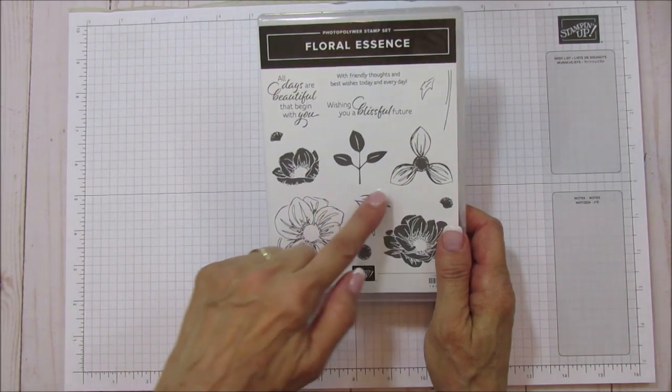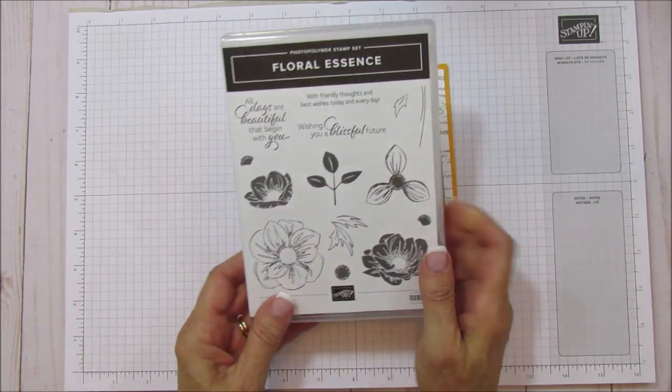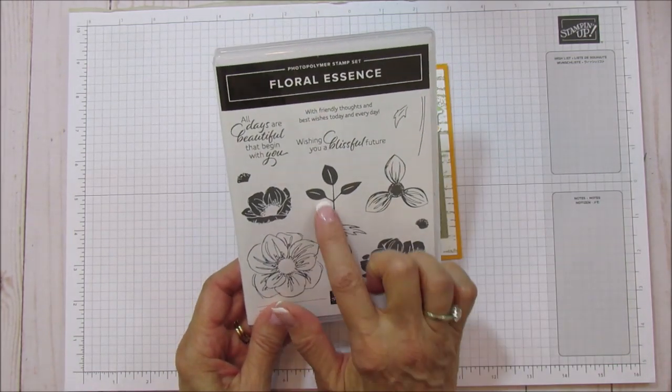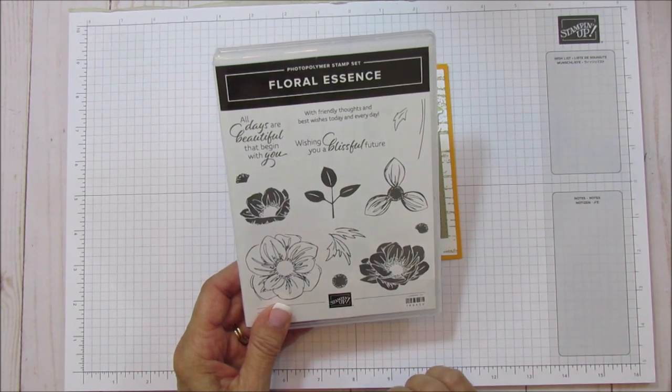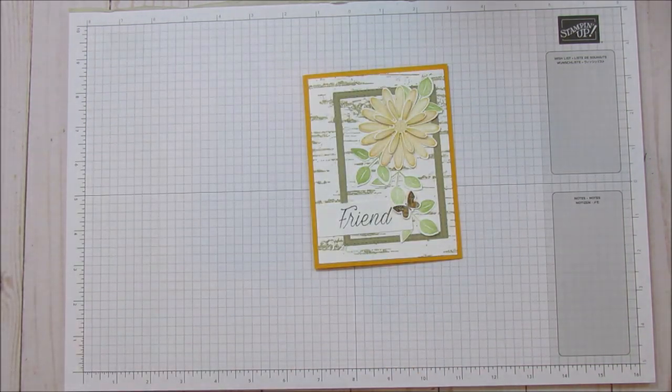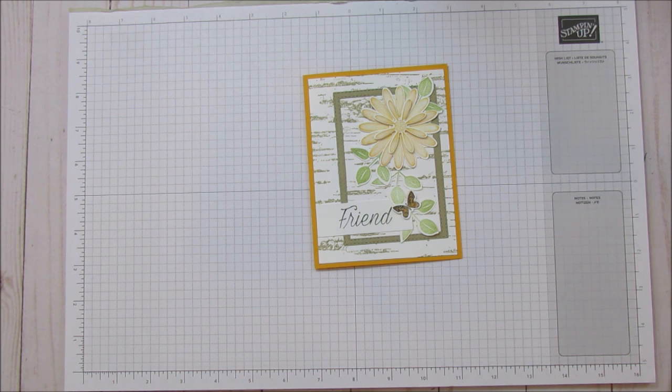I'm also using Daisy Lane stamp set for our daisies here and then I'm also using the leaves that are from the Floral Essence which are these right here. So we have two different stamp sets that have leaves like this that you can use with our leaf punch.